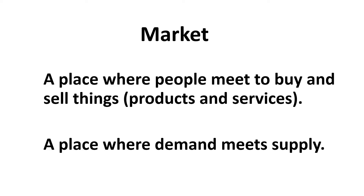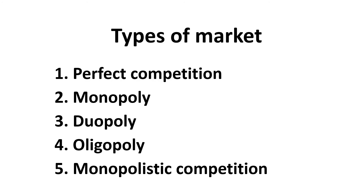In principle, market is a place where people meet to buy and sell things. When we talk about things, they can be products or services. In brief, market is a place where demand meets supply. There are five types of market: perfect competition, monopoly, duopoly, oligopoly, and monopolistic competition.